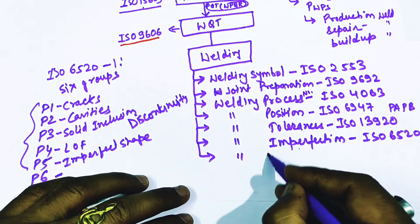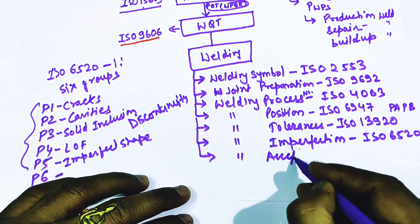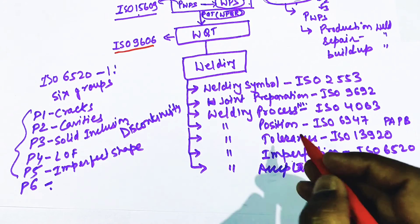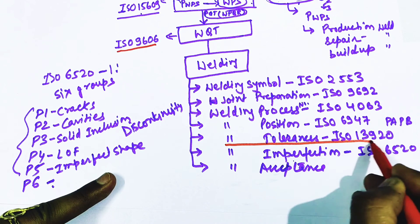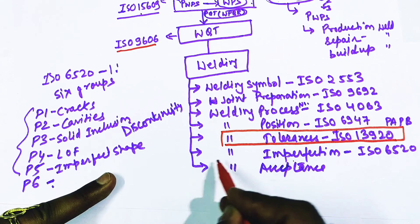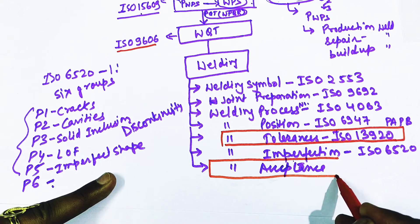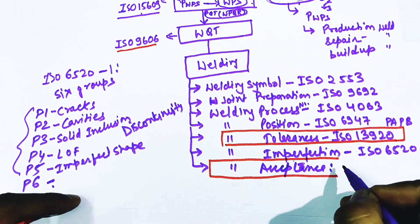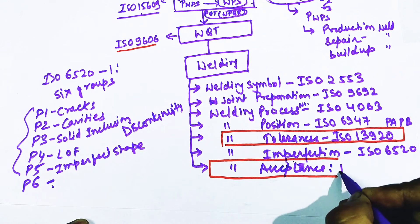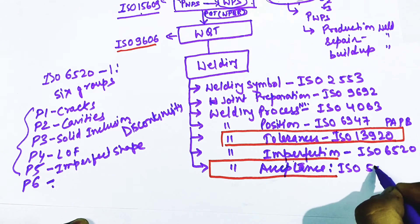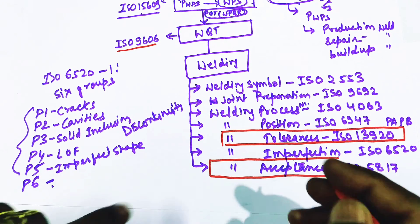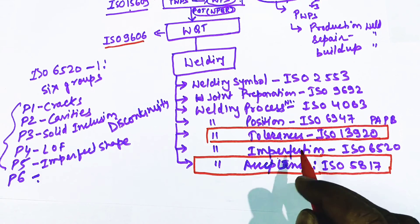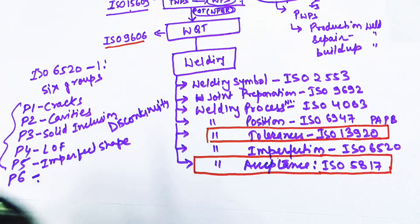After imperfection classification, we have welding acceptance criteria. Many subscribers ask what the acceptance code is. For welding acceptance or imperfection acceptance, the code is ISO 5817. This is the code to refer for welding acceptance.